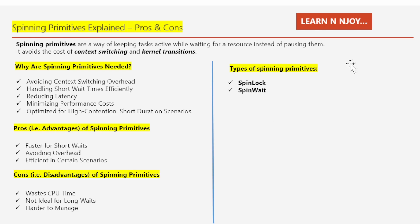Now let's discuss the types of spinning primitives. These are specific implementations of the concept of spinning, which involve continuously checking for a condition rather than putting a thread to sleep. A SpinLock is used for locking resources by making a thread spin until it acquires the lock. A SpinWait is a more refined approach that combines spinning with occasional yielding to reduce CPU waste over time. Both techniques aim to manage thread synchronization efficiently when the expected wait time is very short. We will cover these two in detail in upcoming videos.